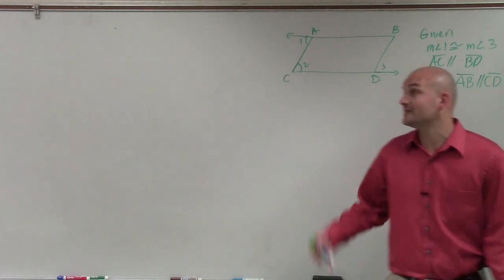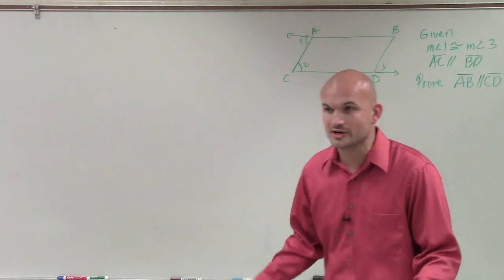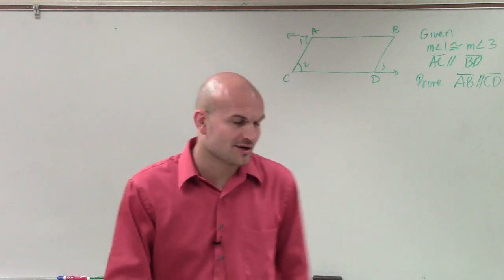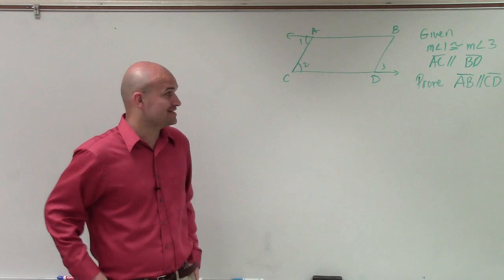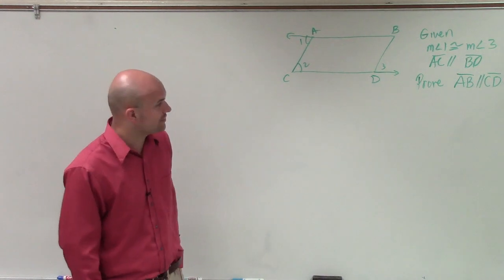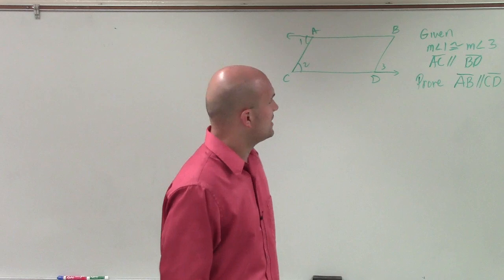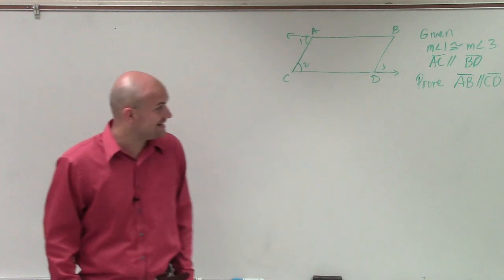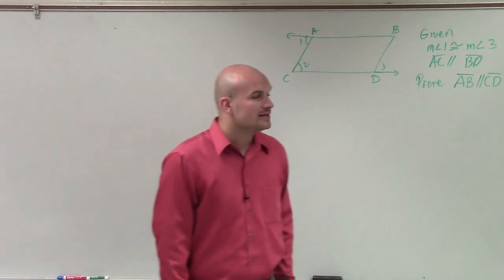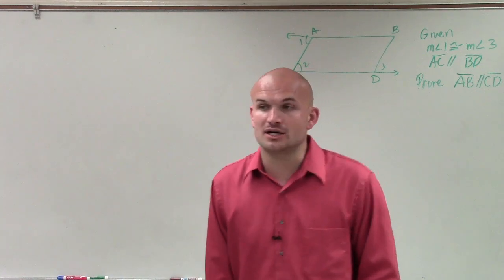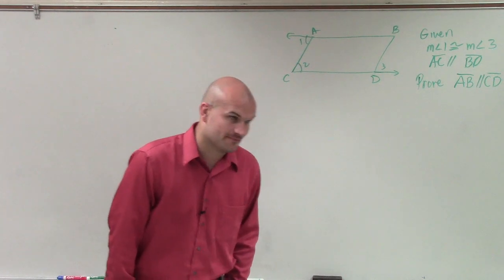So ladies and gentlemen, what we have here is a figure. What I'm trying to do for this one is: I'm given that measure of angle 1 is congruent to measure of angle 3, and that line AC is parallel to line BD. What I want to do is prove that line AB is parallel to line segment CD.